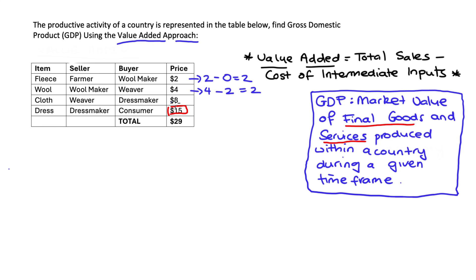How about the next stage of production? The weaver buys the wool and makes some cloth. They sell it to the dressmaker for $8. The cost of that wool was $4. So $8 minus $4 equals $4 — they added $4 worth of value to the wool in order to make the cloth.